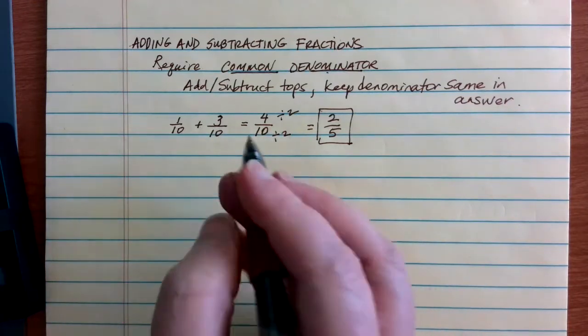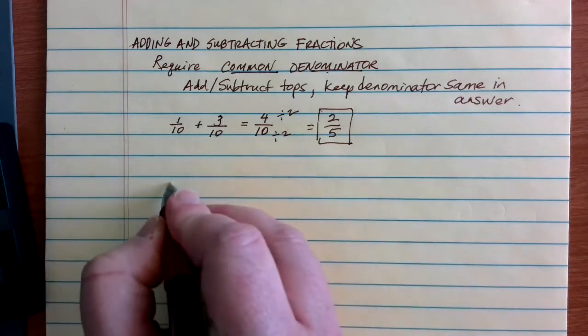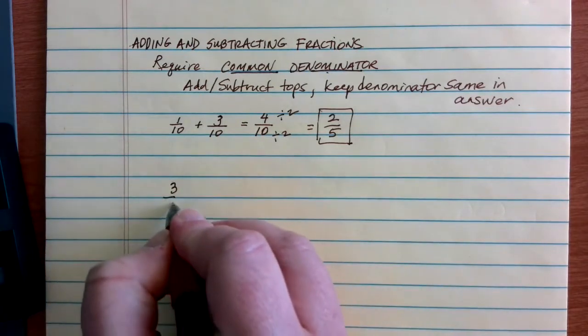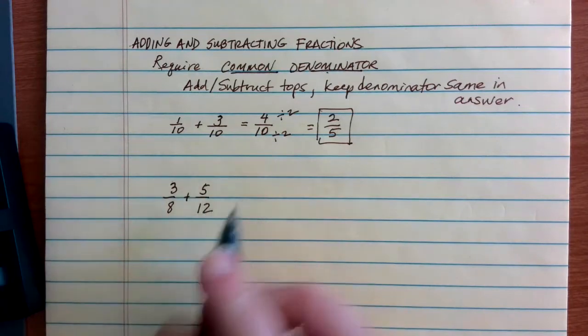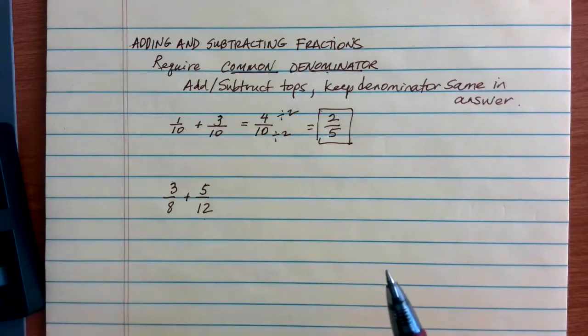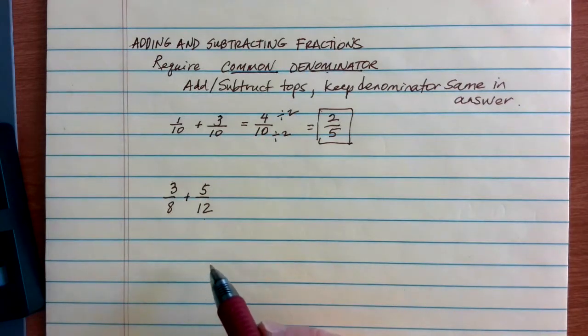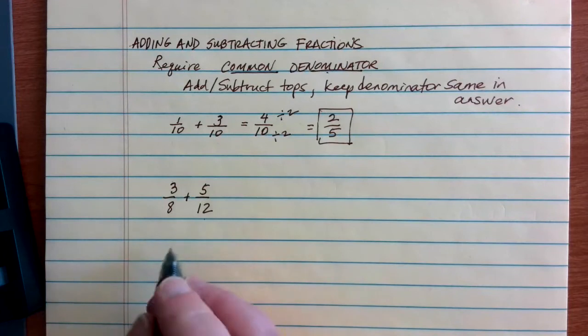So as long as the bottoms are the same, pretty straightforward. Now let's see what happens if we have different denominators. Suppose that we're looking at a problem like 3/8 plus 5/12. In this case, the bottoms of the fractions are not equal, and they need to be equal for me to be able to do any sort of addition or subtraction at all.